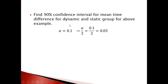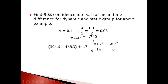For a 90% confidence interval, alpha = 0.1, so alpha/2 = 0.05. The t-value is 1.74. Plug all values into the confidence interval formula to find the lower bound and upper bound.